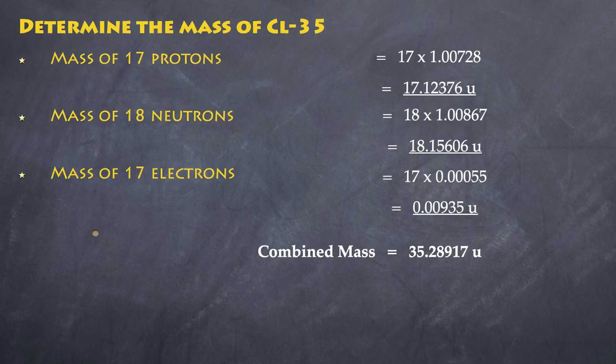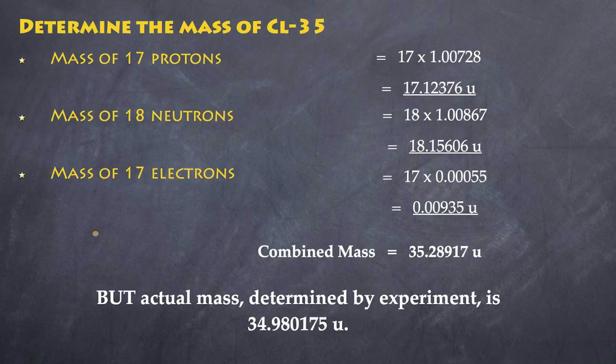All your building blocks should equal the sum total of the parts. But we do know the mass of a chlorine atom. It is equal to 34.980175 and that includes electrons. You'll notice that this is now less than our initial mass. We have lost mass by putting our nucleons together.